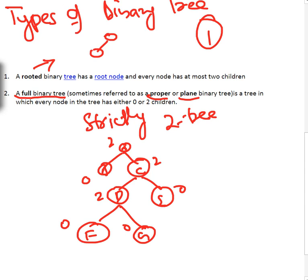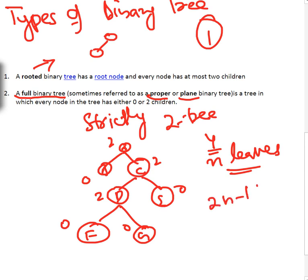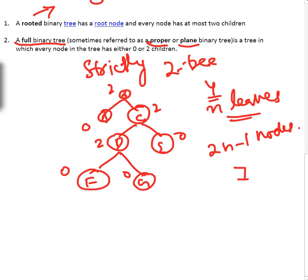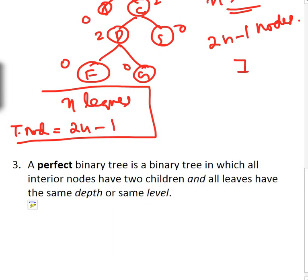An important property of the strictly binary tree: if we have n leaves, the tree will have 2n minus one total nodes. In our example we have four leaves, so total nodes = 2×4 − 1 = 7. Counting: one, two, three, four, five, six, seven — confirmed. So for a full binary tree, total nodes equals 2n minus one, where n is the number of leaves.